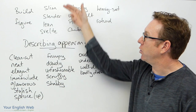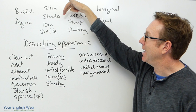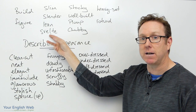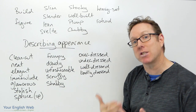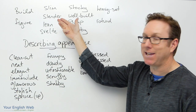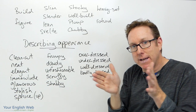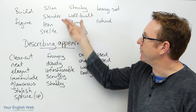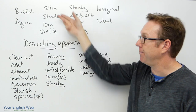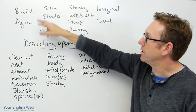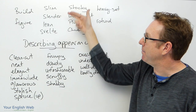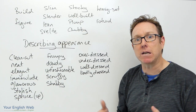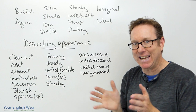We can talk about a slim build, a slender build, a lean build, and we can use this word here as well — svelte. This word is not as common as the other ones but it's similar in meaning to slender, meaning not overweight or fat. Slim, slender, lean, and svelte are all similar in meaning. Lean means there's not much meat on the bones — a very lean build.